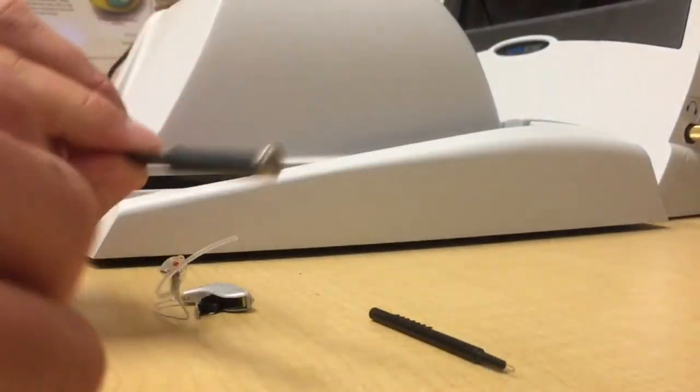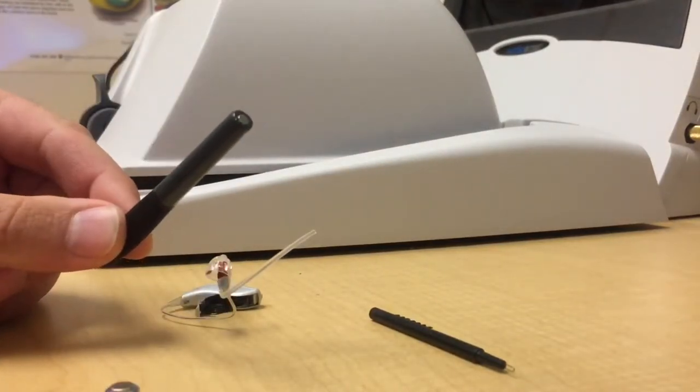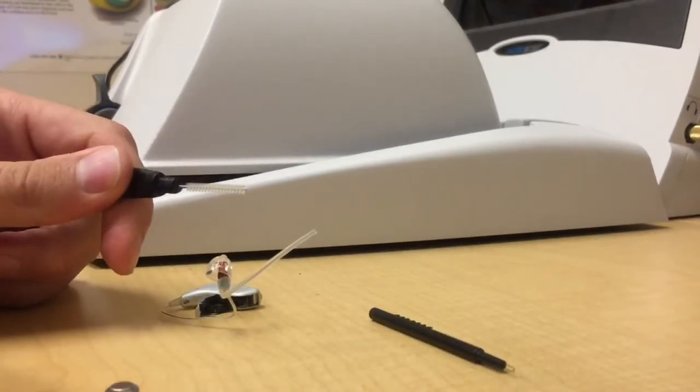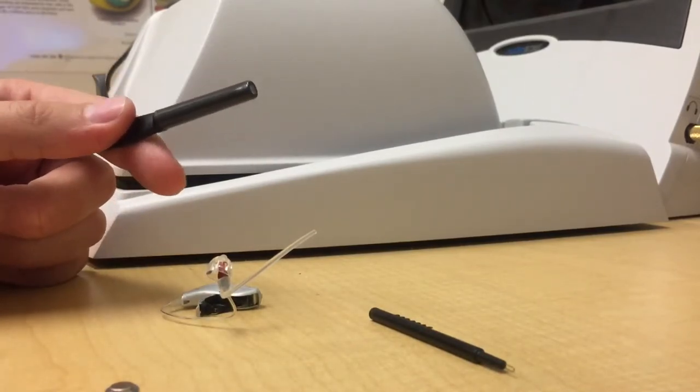So the stick I was using is just a cleaning tool with a magnet at the end. Oticon makes these, but they work with any hearing aids. There's also a cleaning brush inside of it that you can use. On Amazon, I think these are sold for about $10 each.